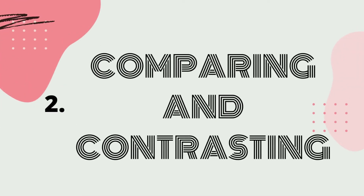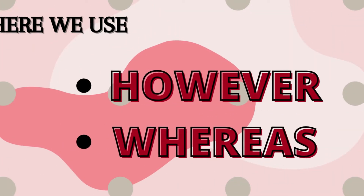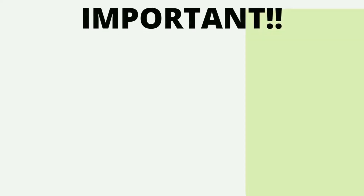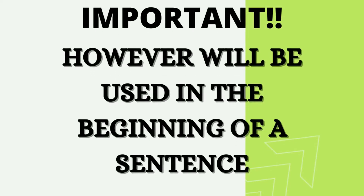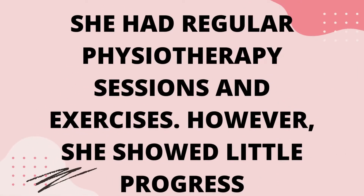Second is comparing and contrasting. Here we use 'however' or 'whereas' when we are comparing or contrasting something. For example: 'She had regular physiotherapy sessions and exercises. However, she showed little progress.' One important thing — 'however' will be used in the beginning of a sentence.